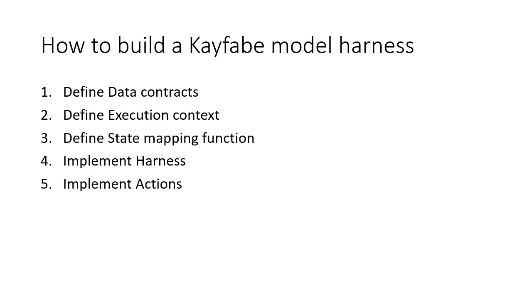Now I'll talk about the user experience of using Kayfabe. There are five steps to building a Kayfabe model harness. First, we define the data contracts - the data structures that correspond to our TLA+ state going into TLC. Second, we define the execution context, which is whatever we need it to be, and then define a state mapping function that maps between program state and TLA+ states, allowing us to summarize the program state at every step. Then we implement the harness with its contracts, and then implement the actions that are proposed by the harness at each step, which Kayfabe uses to select the one that matches the next step in the TLC behavior.